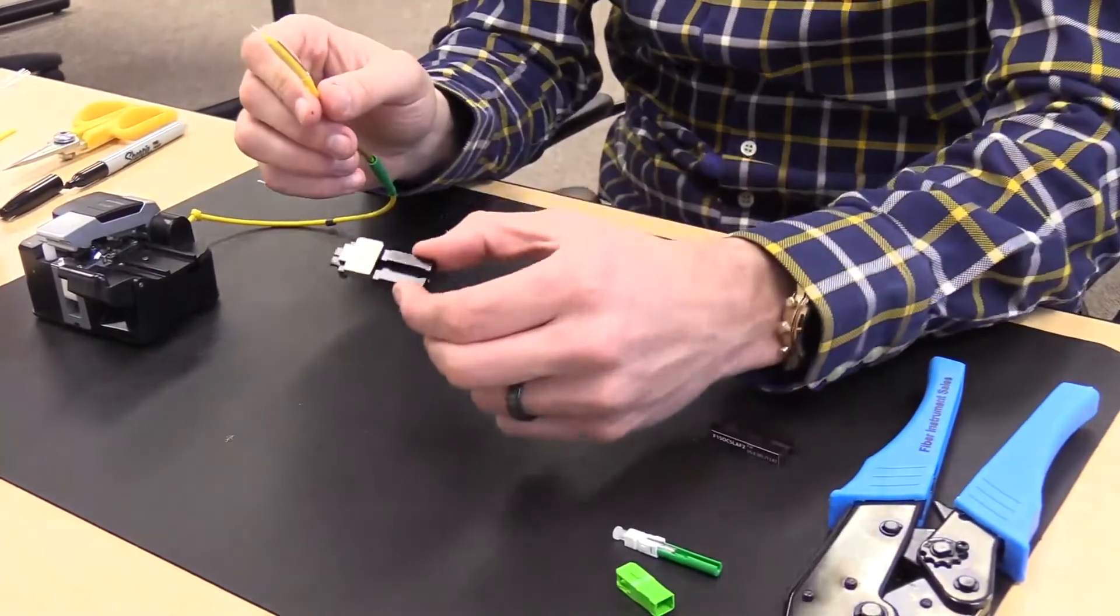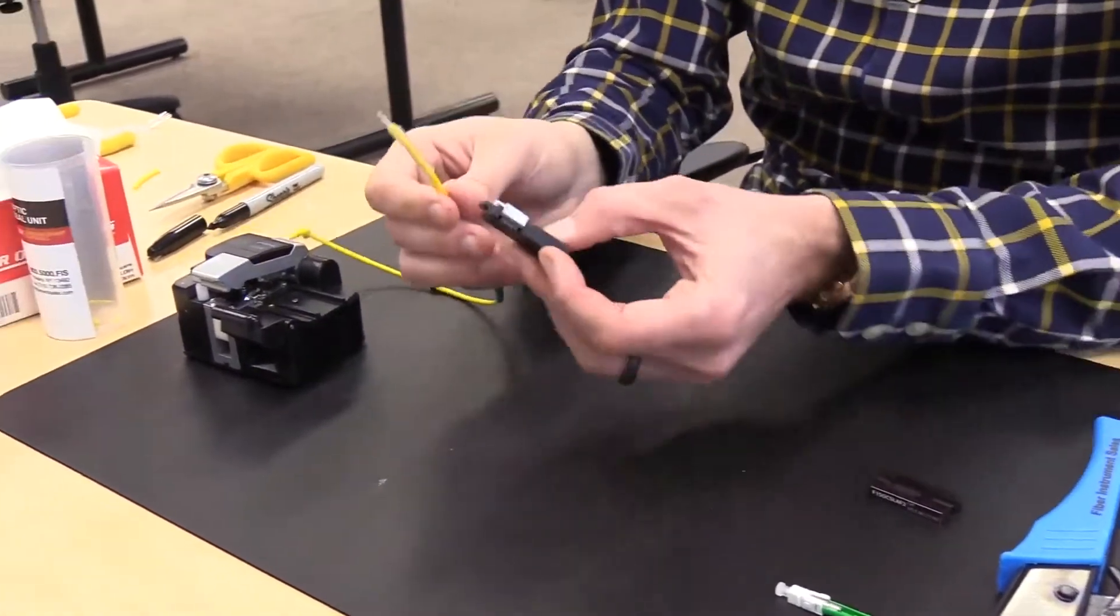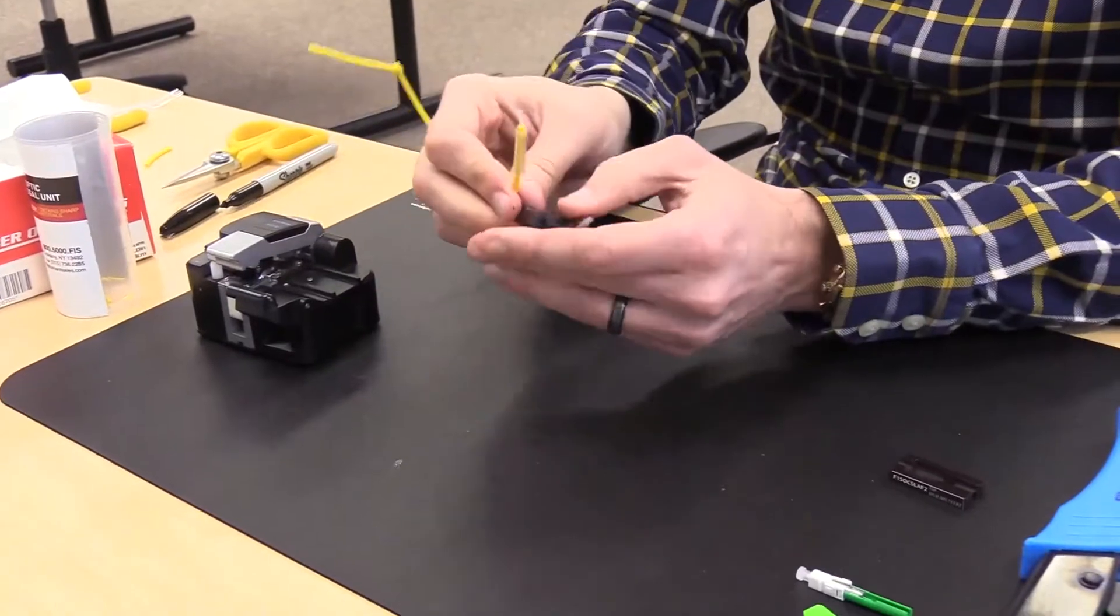Take the FIS cordage holder, open the lid, and place the fiber into the groove right up to the end of the fiber holder.